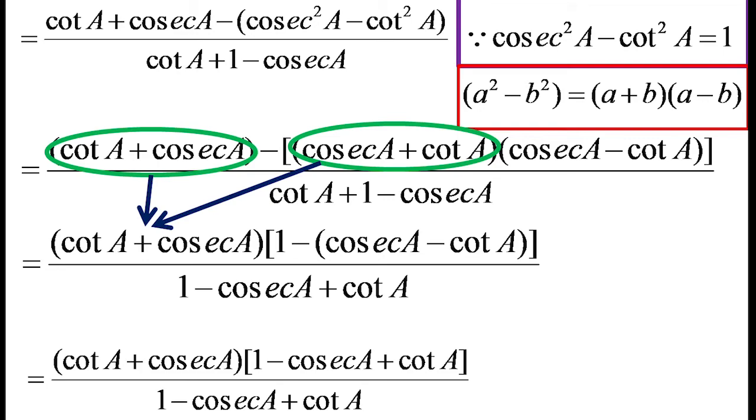I think now you have realized why I have changed the denominator also. I have rearranged only, I did not change, only rearrangement. And numerator and denominator 1 minus cosec A plus cot A is common, so we can cancel that. And so answer is cot A plus cosec A, that is the right side.